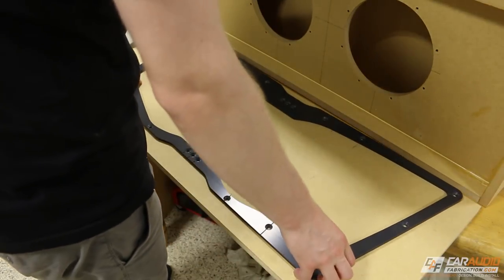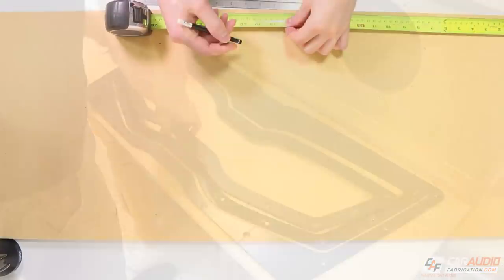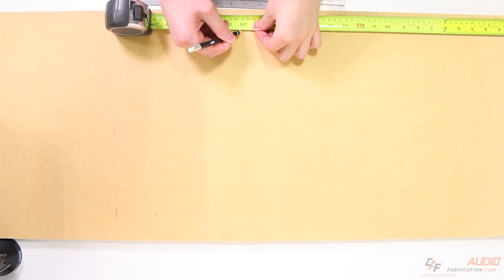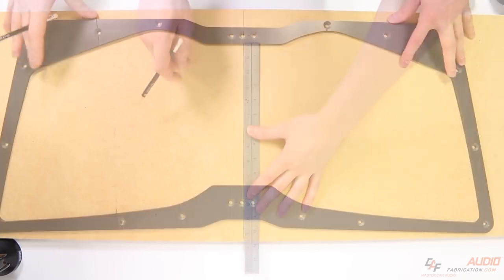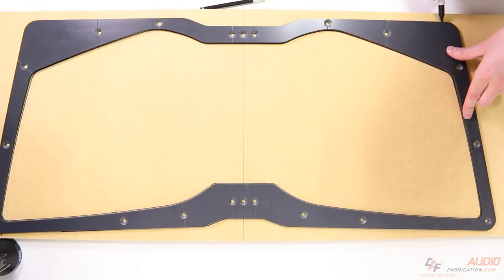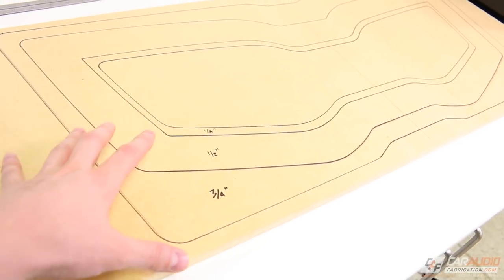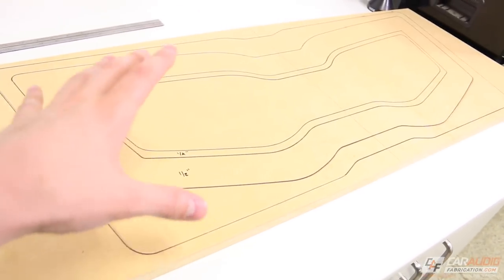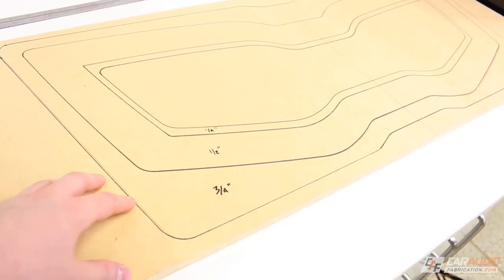You will notice that I built this box in a way that sinks the subwoofer mounting face inside of the box, and that's because I'm going to be adding this beauty panel to the front of the enclosure. To come up with the design of this beauty panel, I start with grabbing some of the different templates and laying them out on the surface to get an idea how they're going to look.